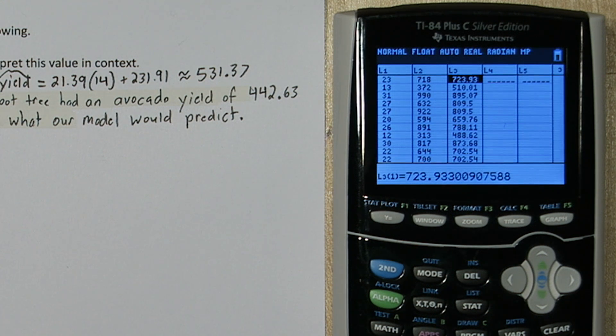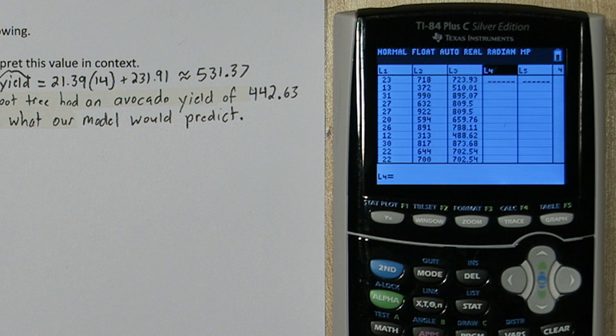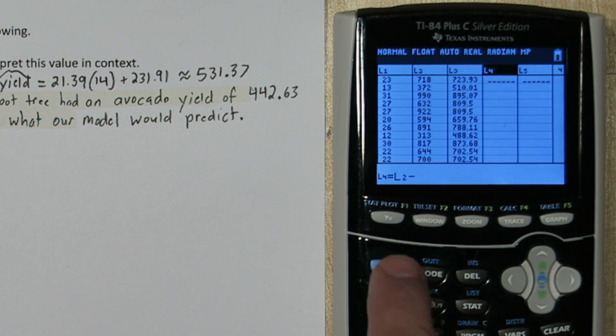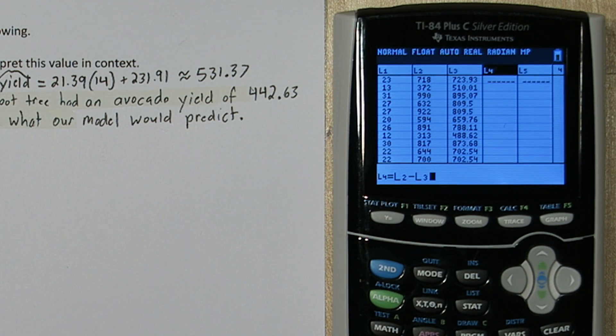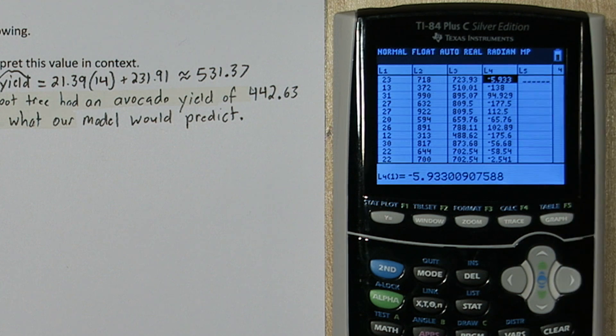Now we're ready to calculate the residuals. A residual is the observed value minus the expected value. So our observed values are in list 2, and I'm going to subtract the expected values in list 3. So to type any list, just press second and then the list number. So I did second 2, minus sign, and then second 3 for this command. Now I'm going to press enter. There's all of our residuals. Now a negative residual means we observed less than what our model would predict, where a positive residual means we had a higher yield than what our model would predict for that tree height.